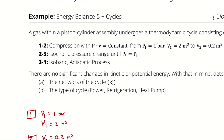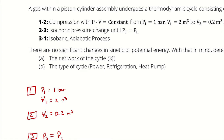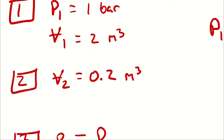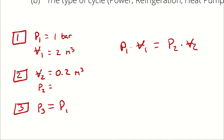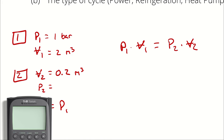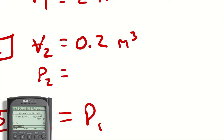Looking at the process descriptions: the process from 1 to 2 had compression where pressure times volume is constant. Therefore, P1 times V1 equals P2 times V2. So I can calculate P2 by knowing P1, V1, and V2. Taking P1 times V1 divided by V2: 1 bar multiplied by 2 divided by 0.2 equals 10. Therefore, P2 is 10 bar.